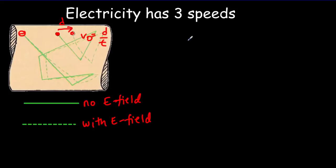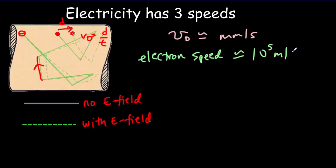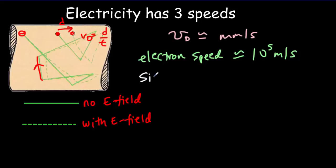Those drift velocities are of the order of millimeters per second — very, very slow. That's very different from how fast the electron is actually moving along its path, which is typically of the order of 10 to the 5 meters per second. So the electron is really moving fast, it's just drifting slowly. And that's quite different from the signal speed.